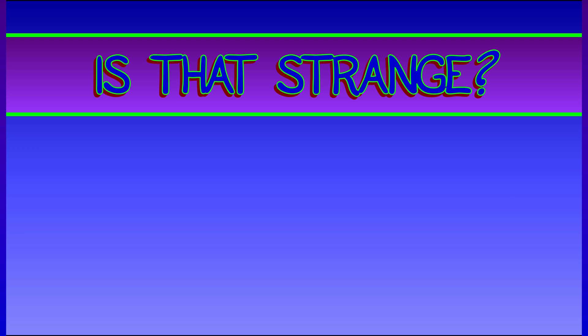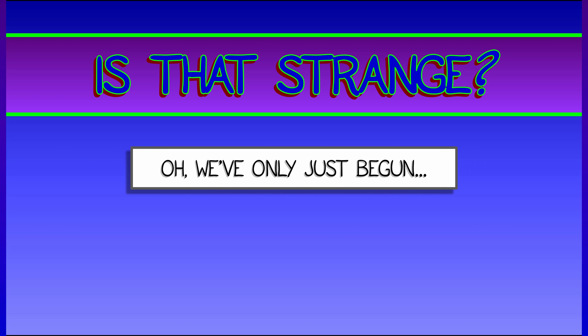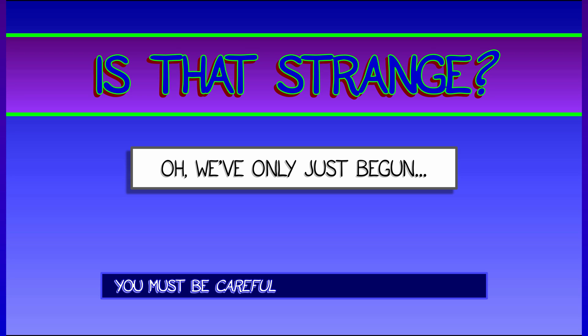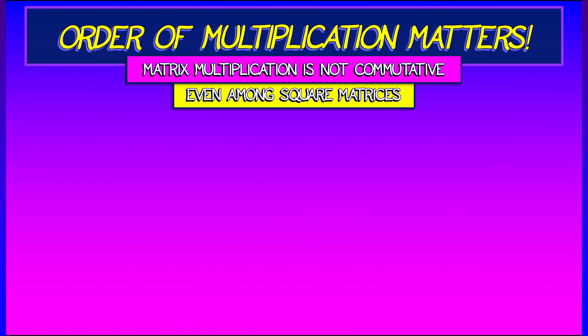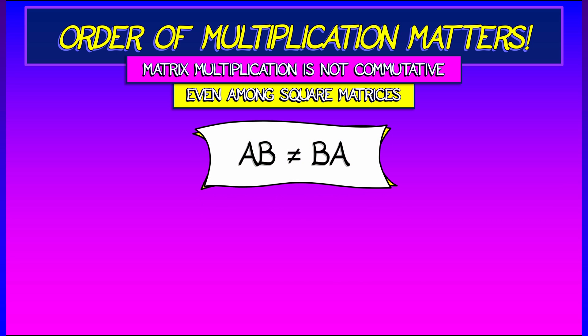Now, you might be thinking that's kind of strange. Oh, we've only just begun with the strangeness. When it comes to matrix multiplication, you have to be really careful and attentive. Here's a surprise. Matrix multiplication is not commutative. The order matters, even among square matrices where you're not going to get in trouble with the dimensions not matching up.